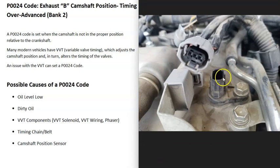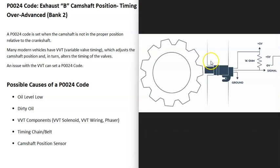The last possible cause is a bad camshaft position sensor on bank 2 — one that has gone bad and is reporting incorrect information back to the computer. Usually a bad camshaft position sensor will trigger other codes as well, but it is possible it's just sending bad data. Also, any wiring issues going to the camshaft position sensor can cause problems too. So if you're getting other codes alongside P0024, pay attention to those.